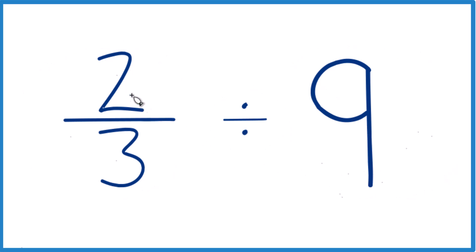So the first thing, 2/3, that's less than 1, so we have a number less than 1 being divided by 9. How many times does 9 go in this number less than 1? It should be a small number. We should get a fraction. Keep that in mind.